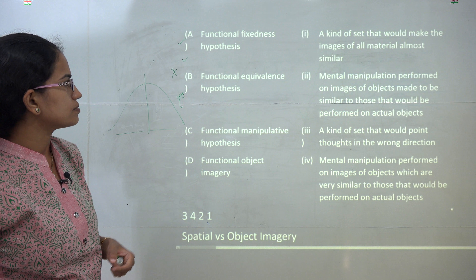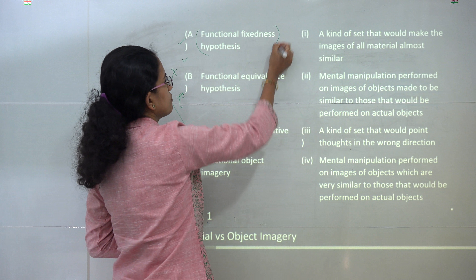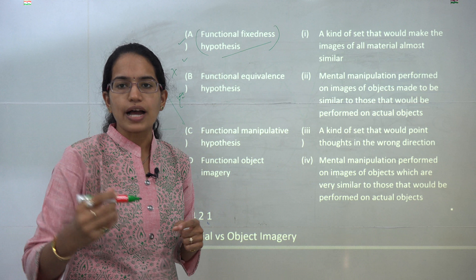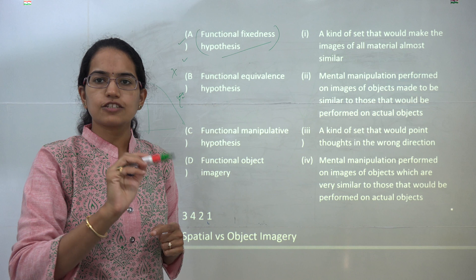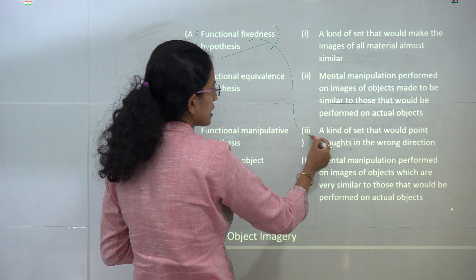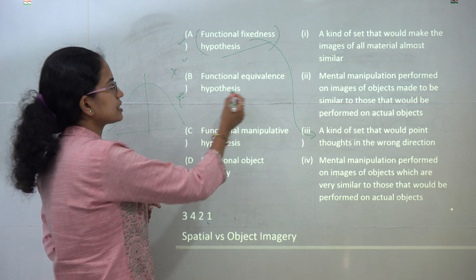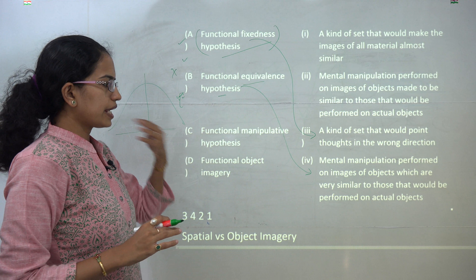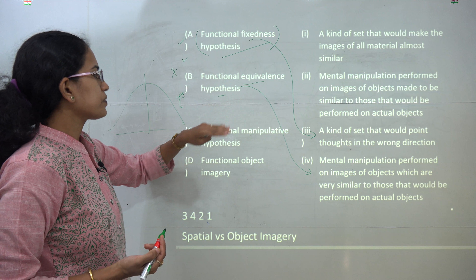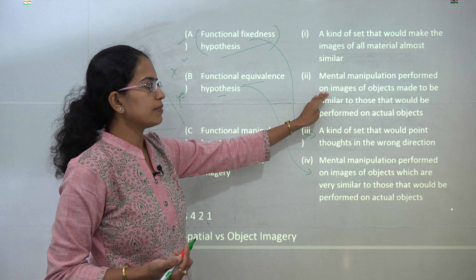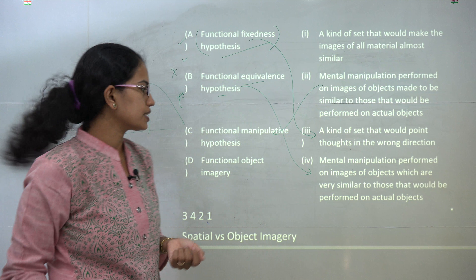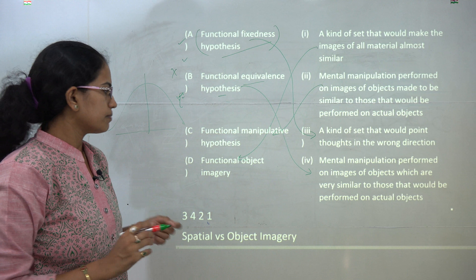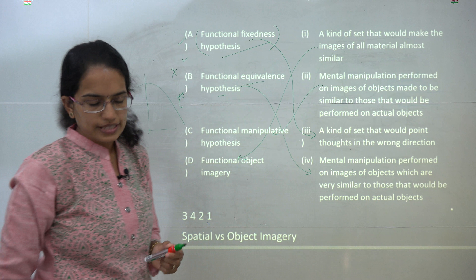The next question asks you to match various concepts. Functional fixedness hypothesis — as the name suggests, you are fixed about something, showing a kind of bias where even if working in the wrong direction, you continue in the wrong direction. Equivalence hypothesis: whatever the modality, the input will remain the same. Manipulative hypothesis: mental manipulations formed are similar to actual objects. Object imagery: images of all material objects look almost similar. These are the correct matches for this question.